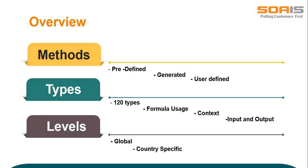Types: there are more than 120 types of formulas available in the HCM system. We need to choose which type of formula needs to be used according to the requirement. Context: most input needs to be passed to the formula from the calling page or process, or explicitly retrieved from the database. However, each formula type has some information that is always available to it at runtime. This is called formula context.